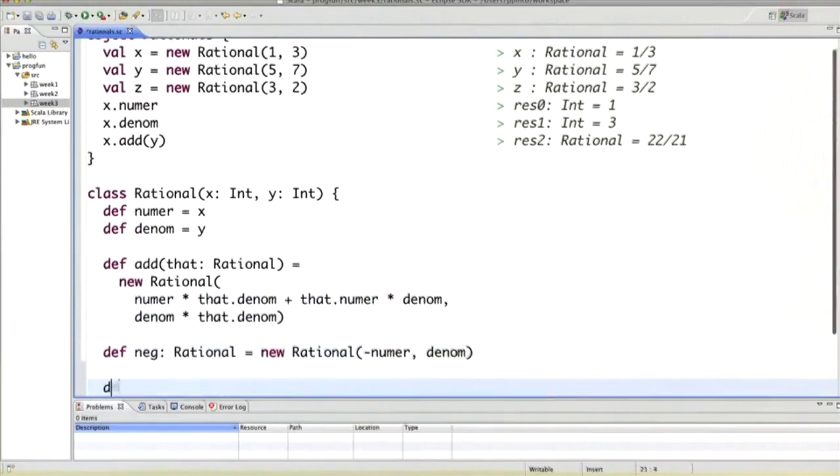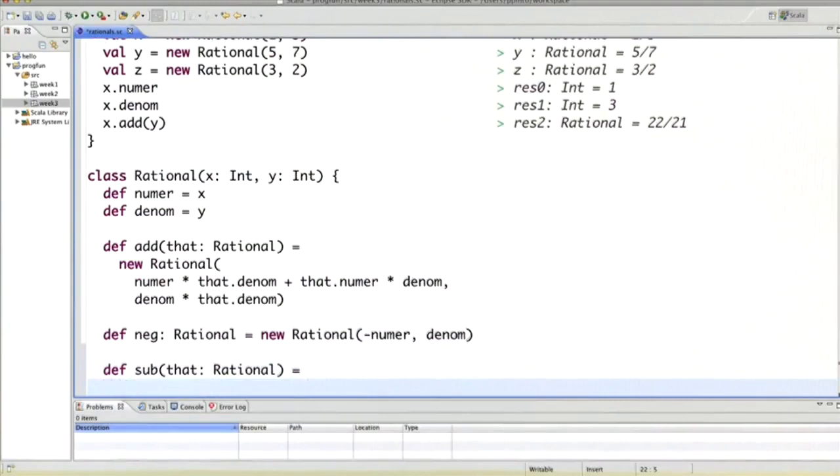The next thing we have to do is define the function subtract, which like add takes another rational and returns another rational. What would we do there? Well, of course, we could define it with a formula not unlike the one for add. The one for subtract directly derives from that.